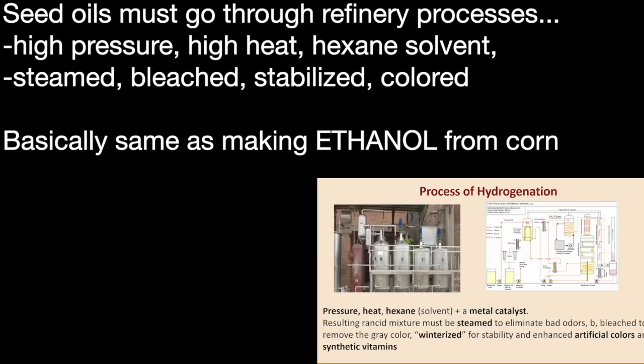This process of hydrogenation turns out to be a rather dramatic one. It involves pressure, heat, hexane — a solvent — and uses a metal catalyst. It has to be steamed to eliminate bad odors, then bleached to remove the gray color, winterized for stability, and enhanced with artificial colors and synthetic vitamins. It's a pretty extensive process. I've actually been inside a hydrogenation plant — it's just a huge, massive operation.